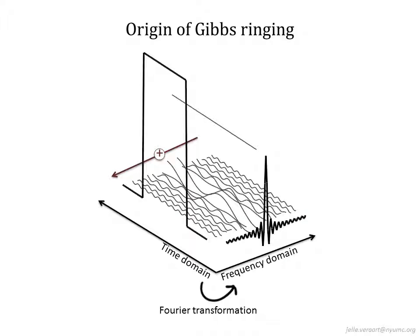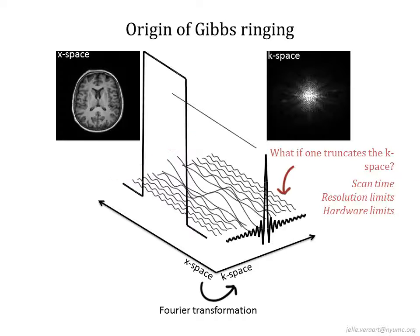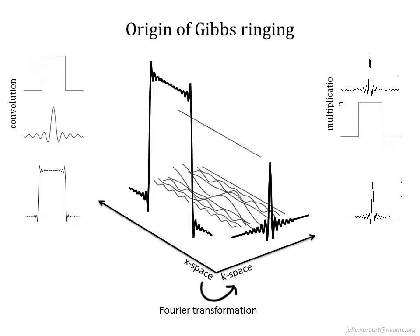Let's first explain why Gibbs Ringing is such an important artifact for quantitative MRI. Every signal in the time domain can be represented by a weighted sum of oscillating wave functions, and the amplitudes of the wave functions correspond to the Fourier coefficients. Those coefficients are what we measure in MRI — k-space captures the frequencies encoded in the image that can be generated by the inverse Fourier transformation. However, due to practical constraints, one cannot measure the high frequencies needed to describe sharp signal edges. If we suppress some of the high frequencies, ringing occurs in the signal, because the high frequencies needed to describe sharp edges are missing and the lower frequencies shine through.